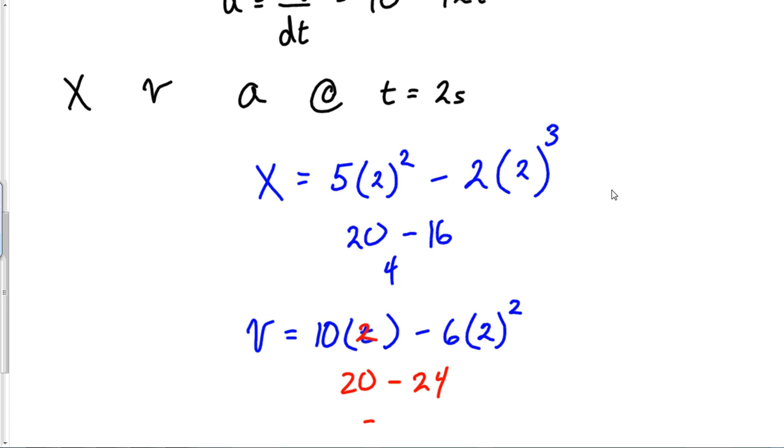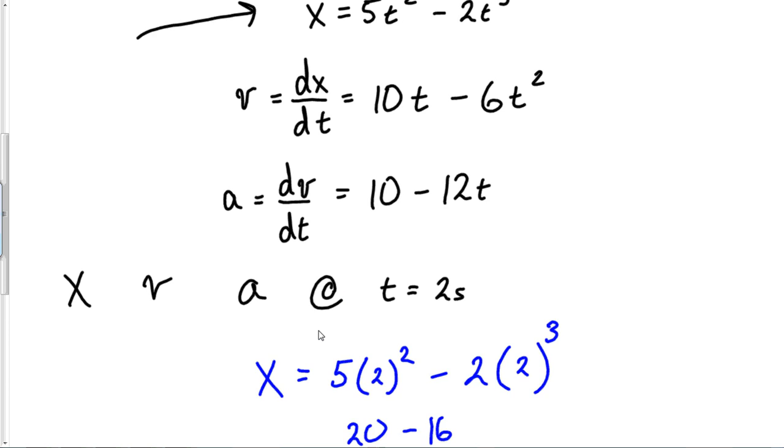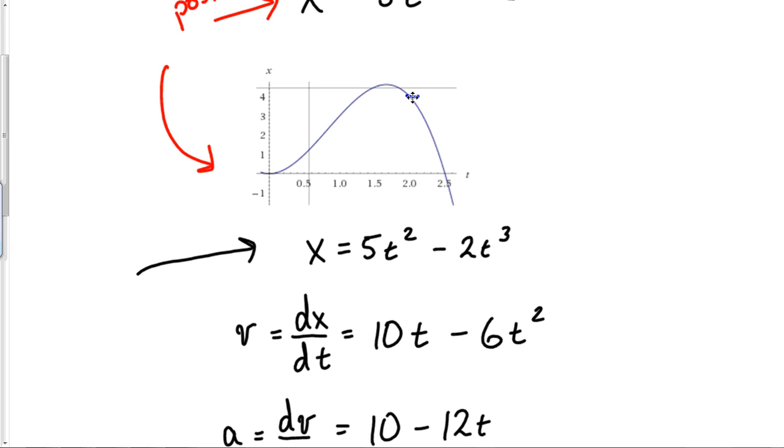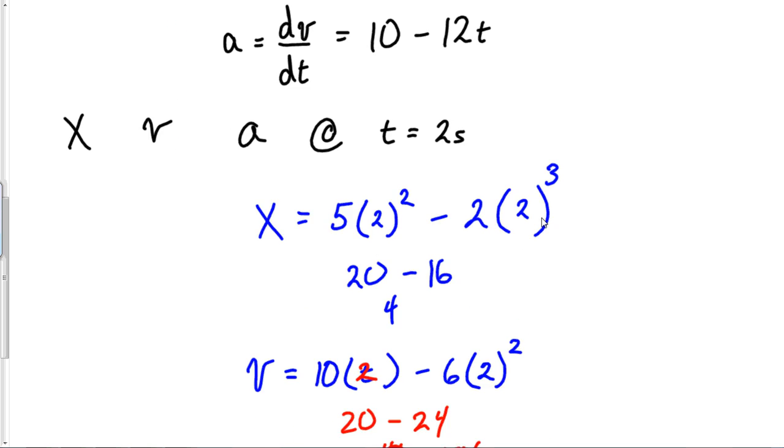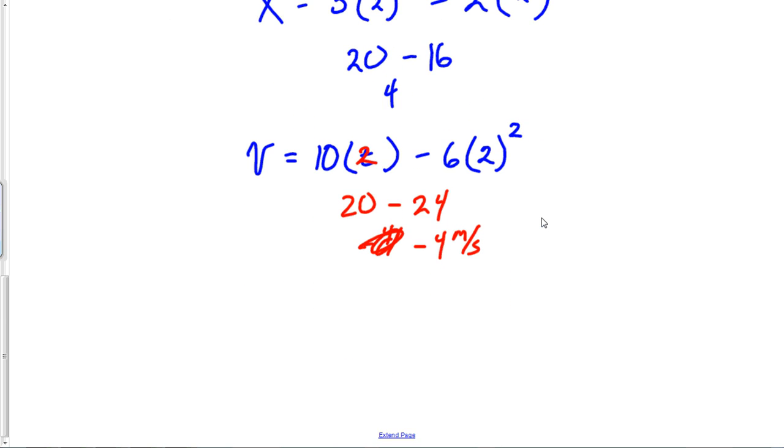Negative 4 meters per second is what I was trying to write. So there is my velocity. Again, I can go back to this graph and look. This object, if we were to look at it from a time point of zero, look at what this object's done. It's going away from zero, away, away, away, reaches some maximum displacement and then begins to return back in the opposite direction at this time.